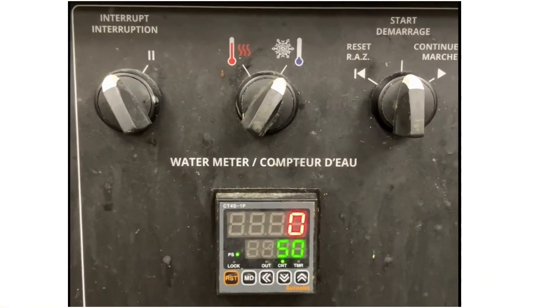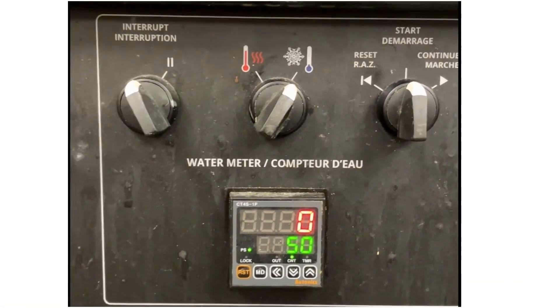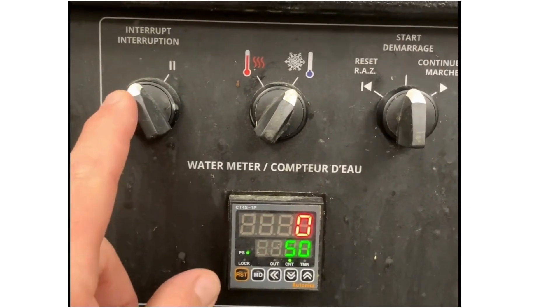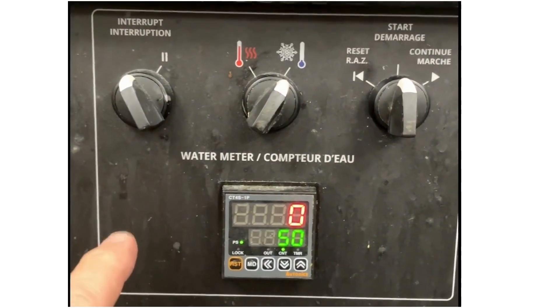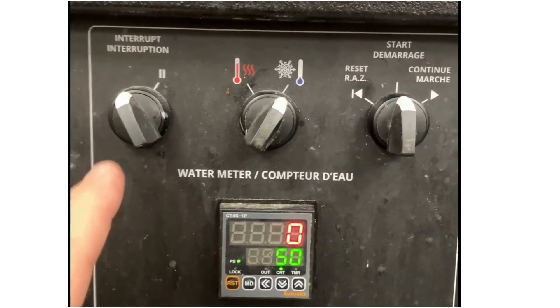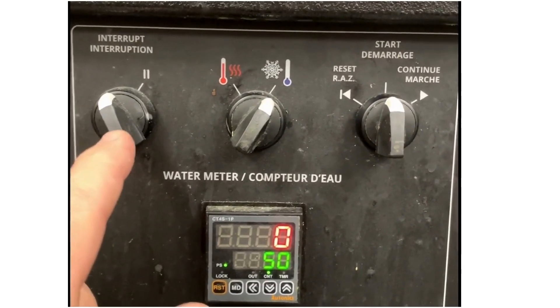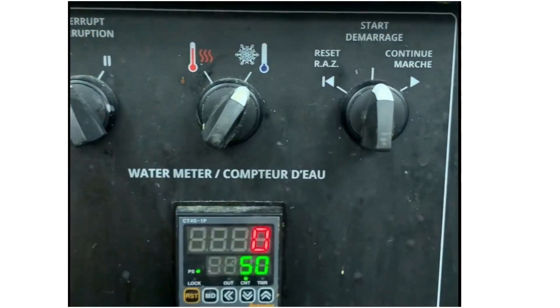This is a demo for the Cleveland automatic water meter. You have the interrupt switch here - if you turn that, it'll stop during a filling of the kettle. And then if you want to continue, just hit the continue switch.